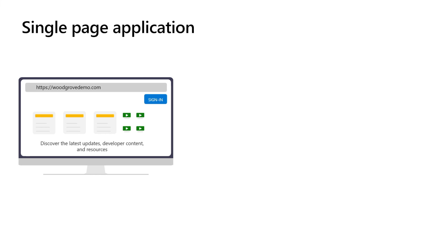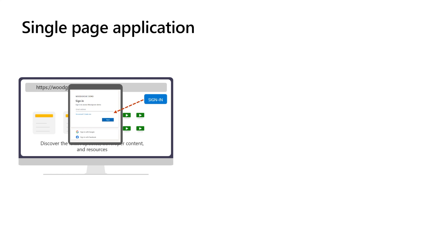Next up, let's discuss single page applications, or SPAs. A single page application loads just one web page from a web server and then updates the content dynamically using JavaScript. The front end is mainly written in JavaScript, often utilizing a framework like Angular, React, or Vue. When it comes to authentication, the flow is handled on the client side using JavaScript code. To sign in, the application typically uses a pop-up window, but it can also redirect to Microsoft Entra External ID. After successfully authenticating, it returns to the application with an authorization code, which is exchanged for an access token. This sign-in process is known as the OAuth 2 authorization code flow.